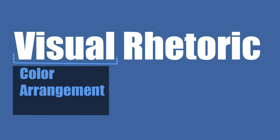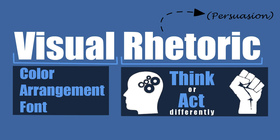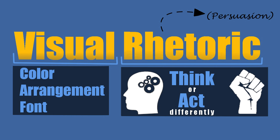The visual part of visual rhetoric deals with everything you see when you look at a particular image — from the color, to the arrangement, even to the choice in font. The rhetoric portion of the term deals with persuasion, with how those visual elements persuade the viewer to think or act in a particular way. Therefore, when we think about visual rhetoric, we should ask about both what we see when we look at a document, an image, or an object, as well as how the design of what we see makes the audience think or act in specific ways.